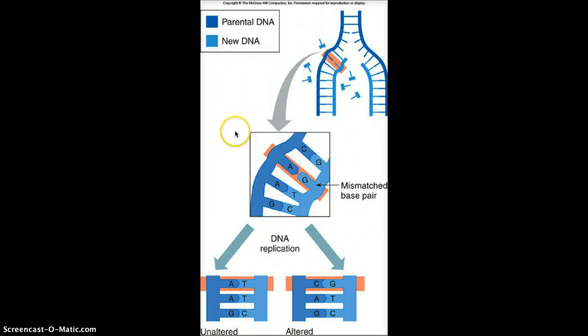Okay, so here we're looking at a spontaneous mutation that can occur during DNA replication. So if you remember, during DNA replication, we start with one parent strand. The DNA molecule unzips, and we get two strands of DNA that are identical to the original parent strand.